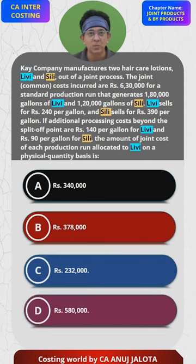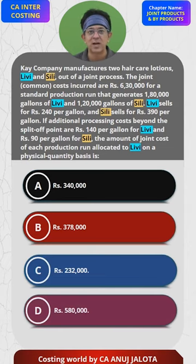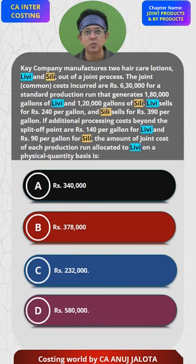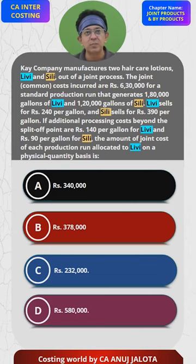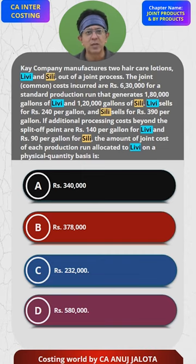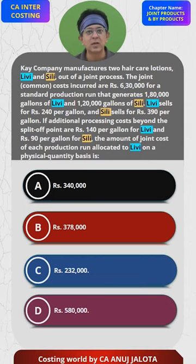A lot of extra data is given, but the question asks for apportionment on a physical measure basis. Physical measure means the output method. Output is 1,80,000 and 1,20,000, which gives a ratio of 3 to 2. So divide the joint cost ₹6,30,000 in the ratio 3:2. Three-fifths goes to Livy: ₹6,30,000 × 3/5 = ₹3,78,000. So B is the correct answer.